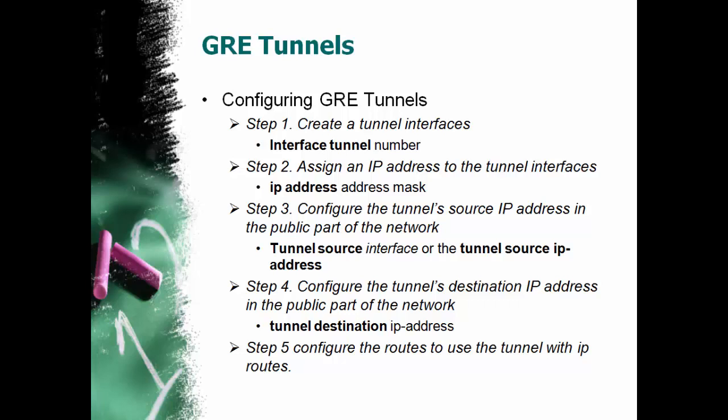So you'd say 'interface tunnel 0,' and this is done from configuration mode. Once you create this virtual tunnel interface, you've got to assign an IP address to it, just like you would any other interface. The command for that is 'ip address,' your address, and then your subnet mask. I always like to do 'no shut.'